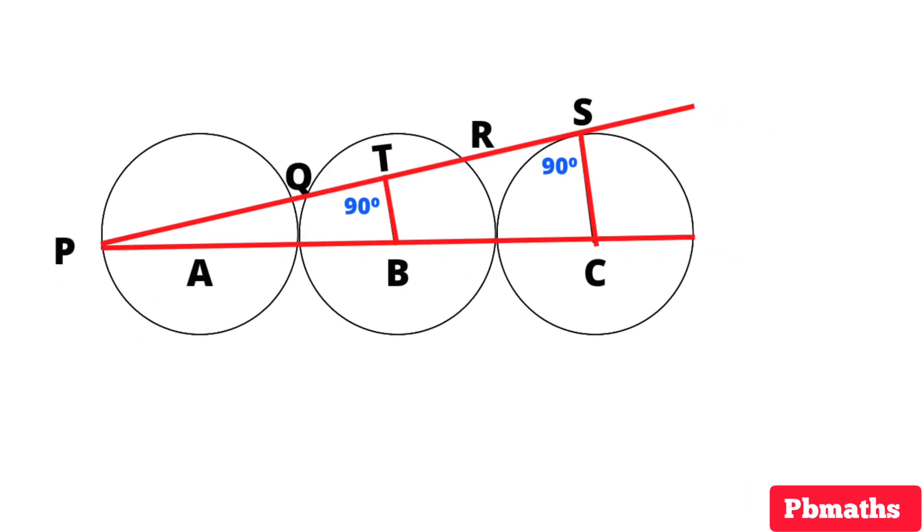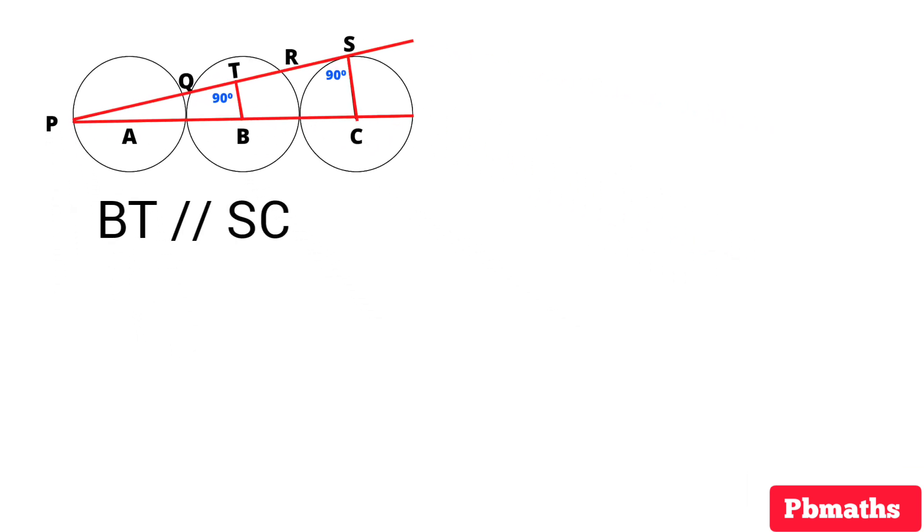Now we can say that BT is parallel to SC. So triangle PSC and triangle PTB are similar to each other. Now, if two triangles are similar to each other, then their corresponding sides are in equal proportion.